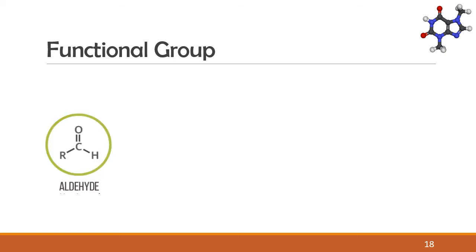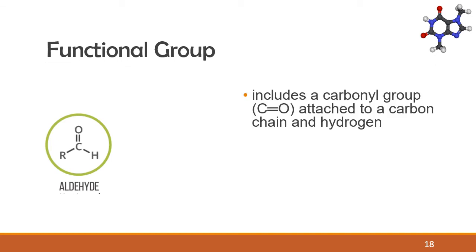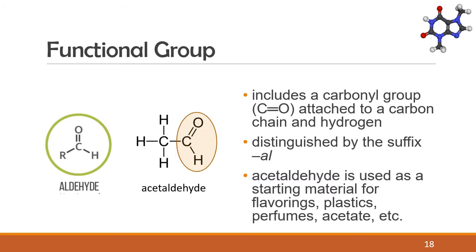The next group is the aldehyde. An aldehyde includes a carbonyl group — a carbon atom double bonded to an oxygen atom — attached to a carbon chain and hydrogen. Aldehydes are distinguished by the suffix "-al" in their name. Acetaldehyde is used as a starting material for flavorings, plastics, perfumes, acetate, and more.